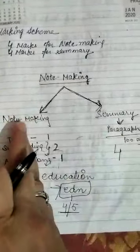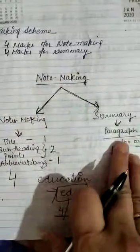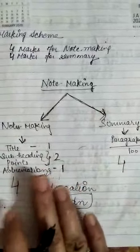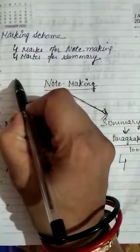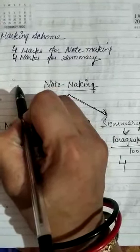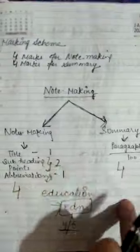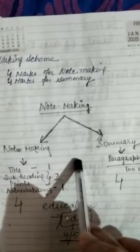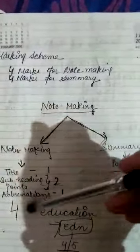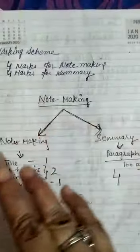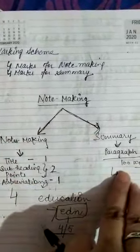Notemaking is divided into two parts. The first part is where you have to prepare the notes, and in the second part you have to prepare the summary of those notes. In the question paper, it will be the second question and it will be of eight marks — four marks for notemaking and four marks for summary. You will be given a long passage containing four to five paragraphs, and you have to make notes of that passage.